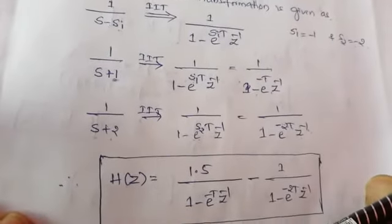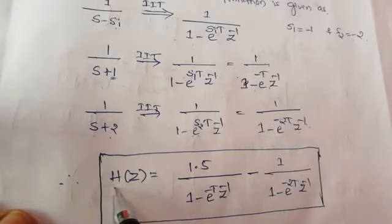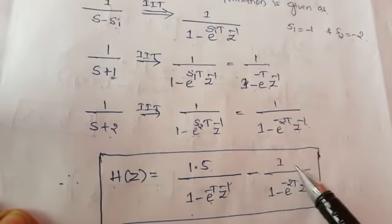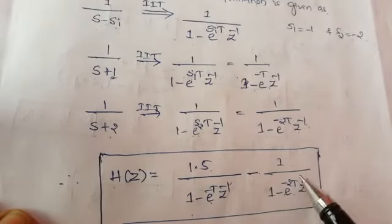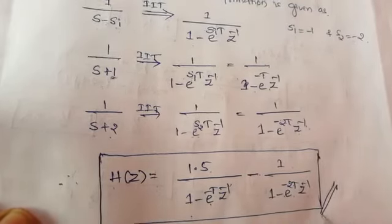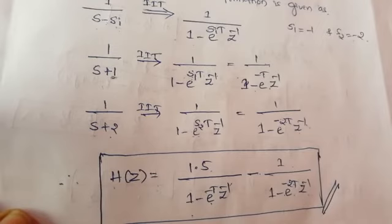So the final answer — the transfer function of the digital filter by using the IIT method — is H(z) equal to 1.5 divided by (1 minus e^(-T) * z^(-1)) minus 1 divided by (1 minus e^(-2T) * z^(-1)). This is the transfer function of the digital filter by using the impulse invariant transformation method. Thank you.